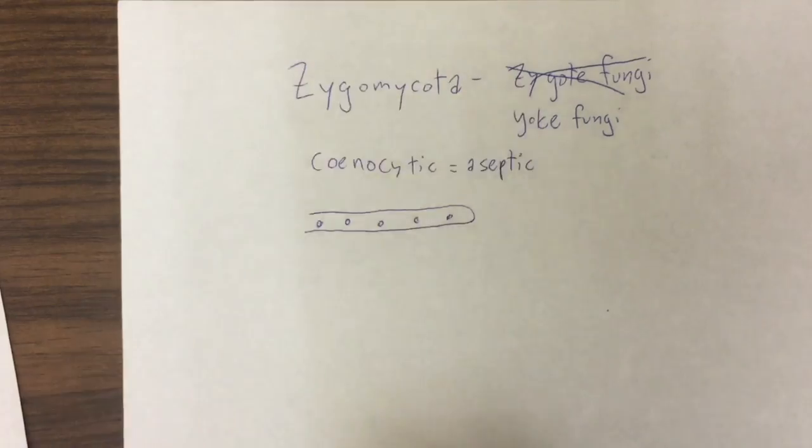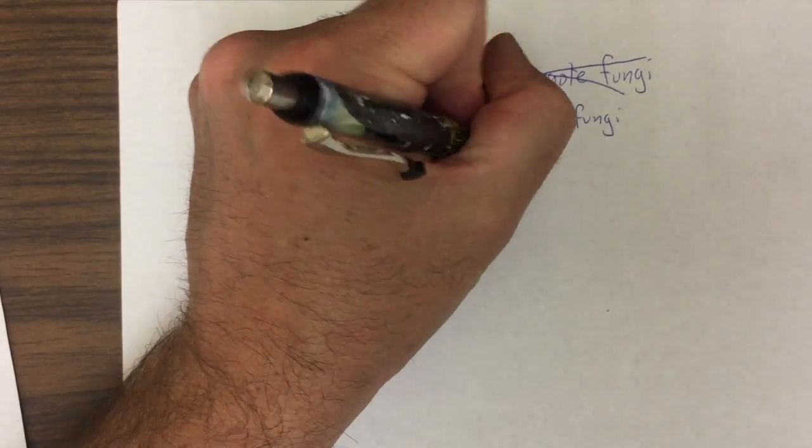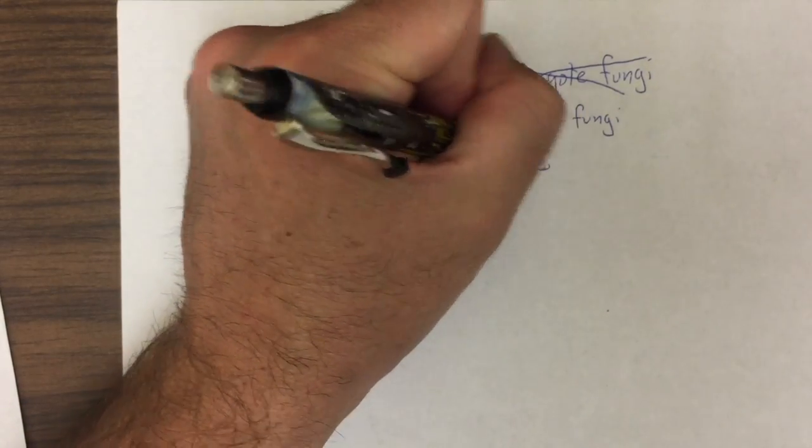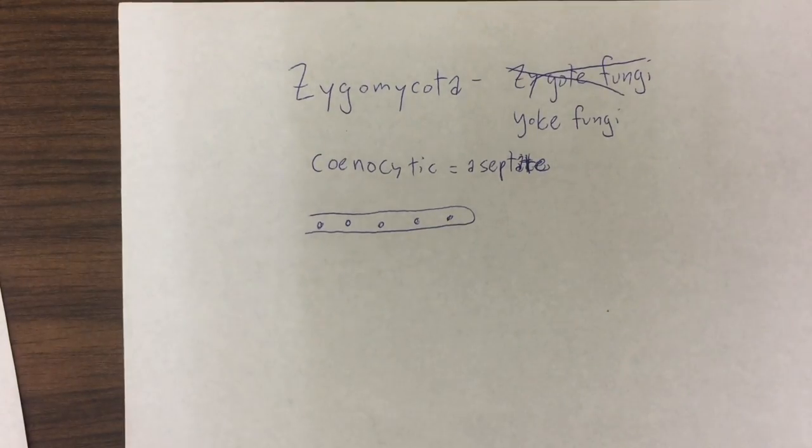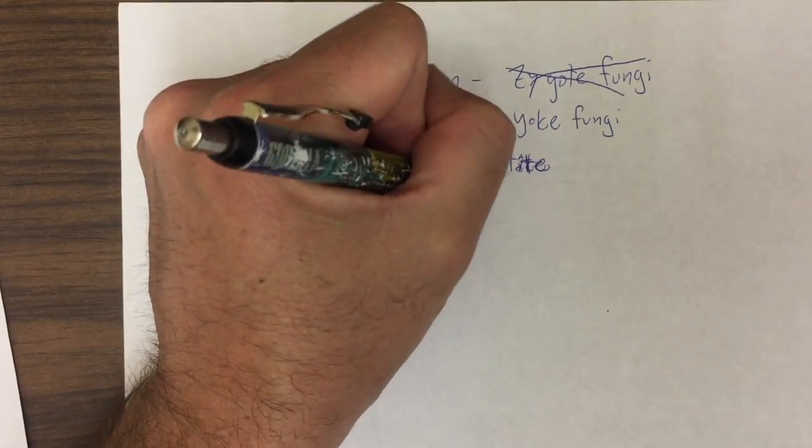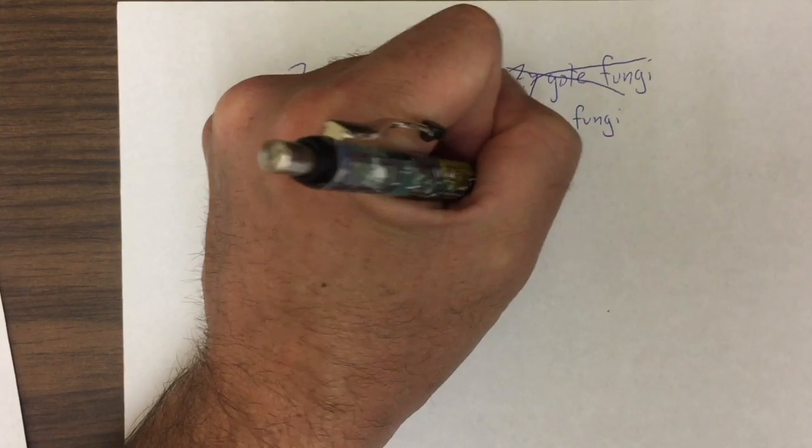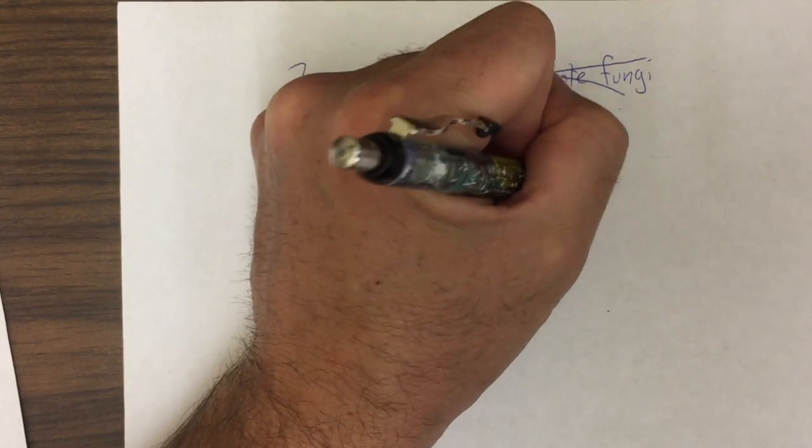So another way of saying that is that they are aseptate. So no septa or cross walls between nuclei.